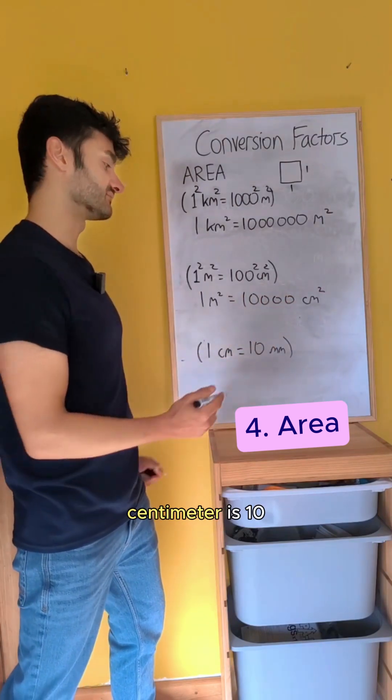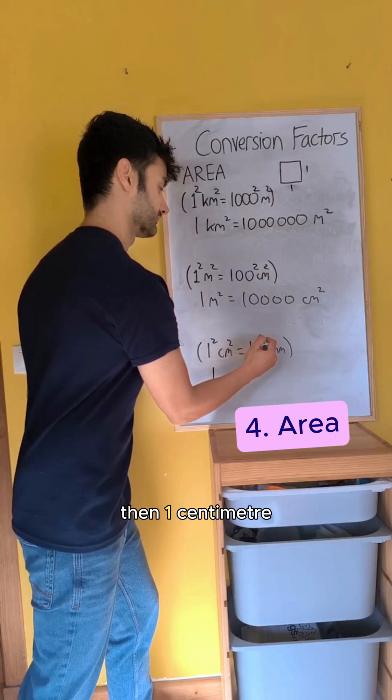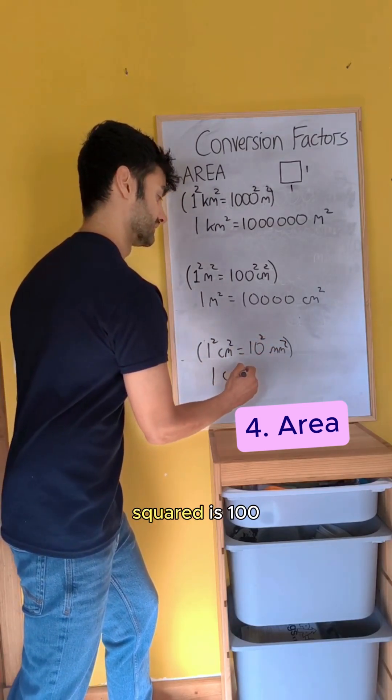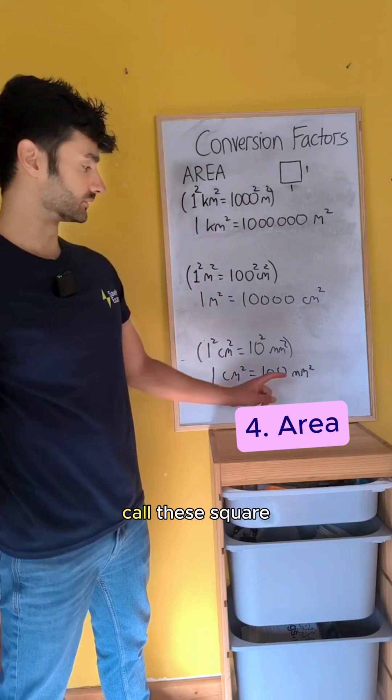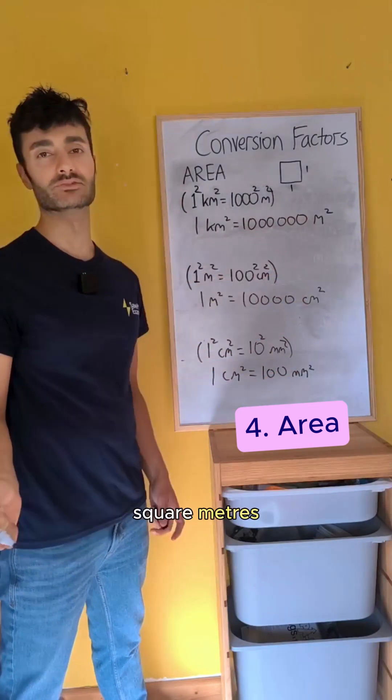And if one centimeter is ten millimeters, then one centimeter squared is a hundred millimeters squared. You can also call these square millimeters, square centimeters, and square meters.